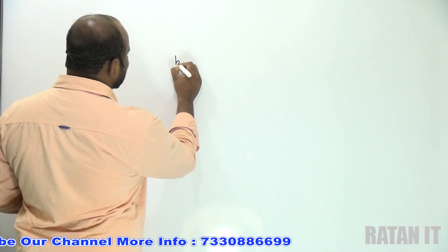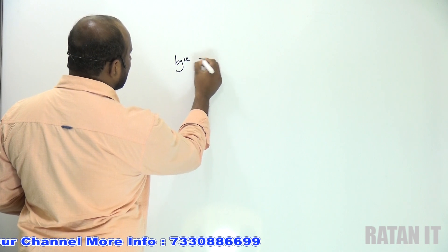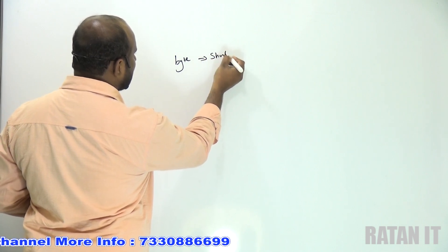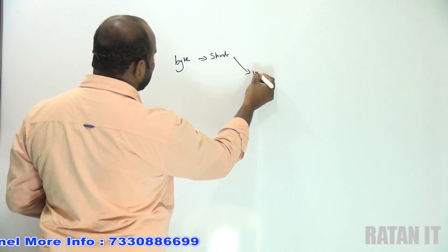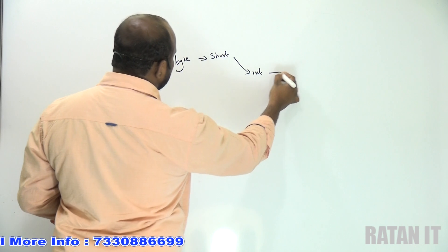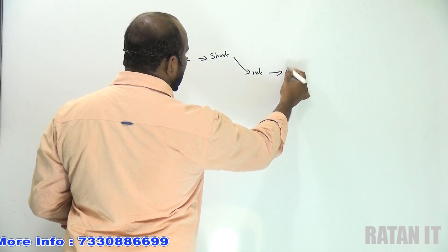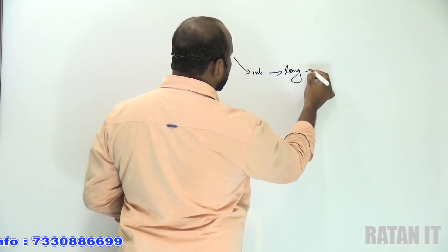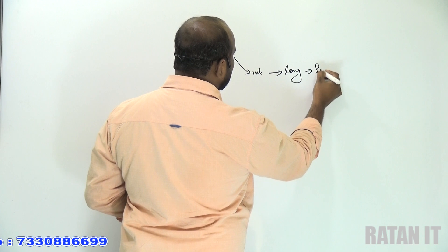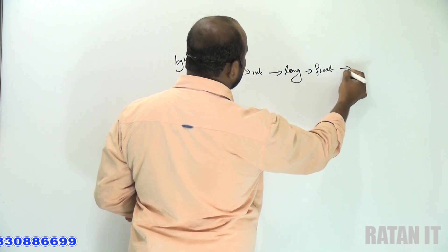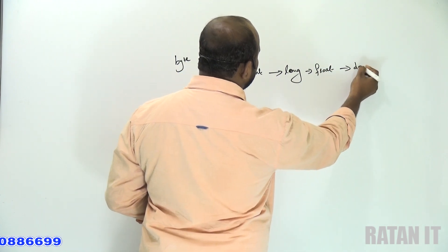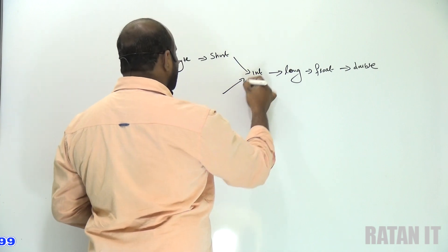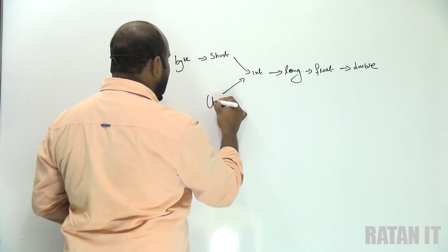Type promotion is always done from left to right. The order is: byte to short, short to integer, int to long, long to float, and float to double. You also have the char data type in this hierarchy.